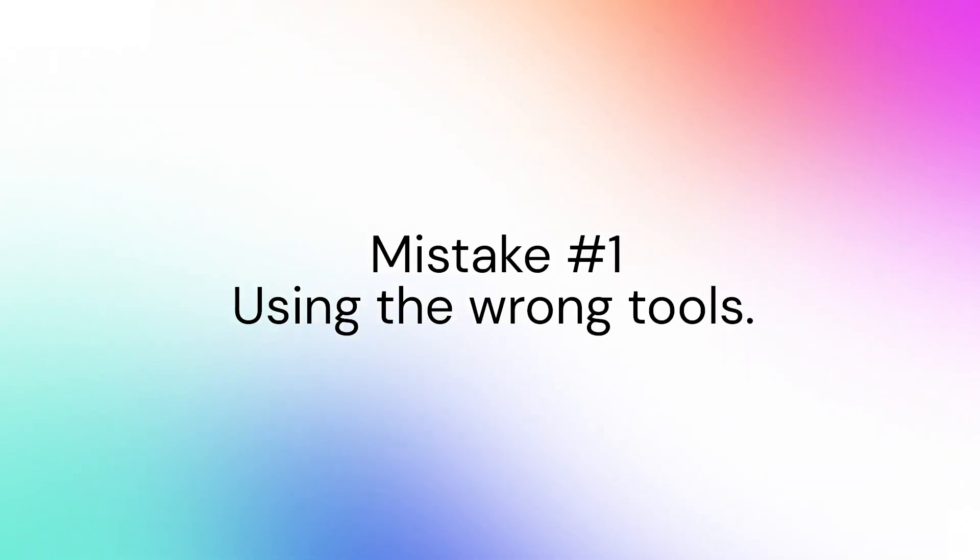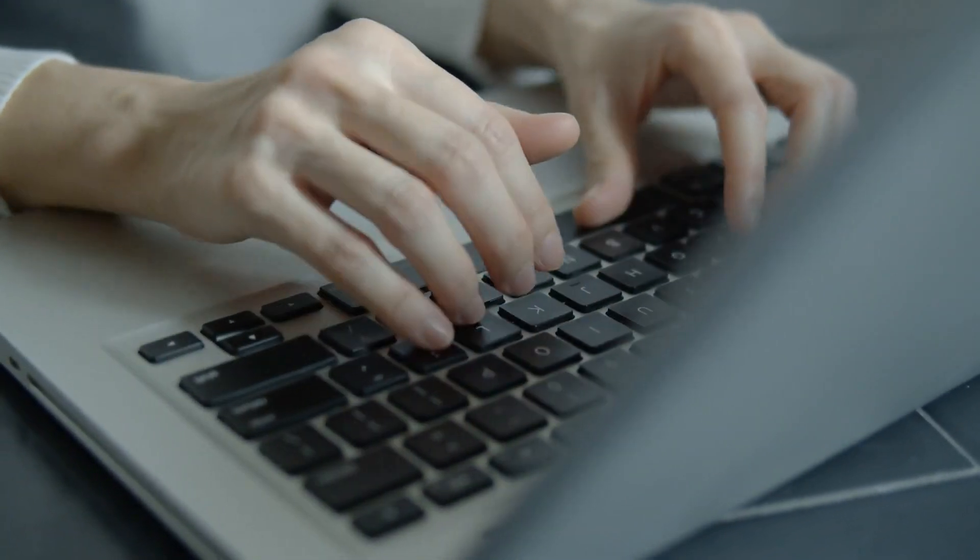The number one mistake that people make when building with no code is identifying the wrong tool to build with. Oftentimes that starts because people have a vision of the end product they want to build, and instead of building a first version of that product, they want to figure out which tool allows them to build this incredibly huge software monster. They're quickly directed towards tools that are a lot more complex, they start learning them, feel demotivated, and suddenly they're giving up on their dreams because they identified the wrong no-code tool. That's often because people try to run before they learn how to walk, and it all comes down to not identifying the minimum viable product you're trying to build.